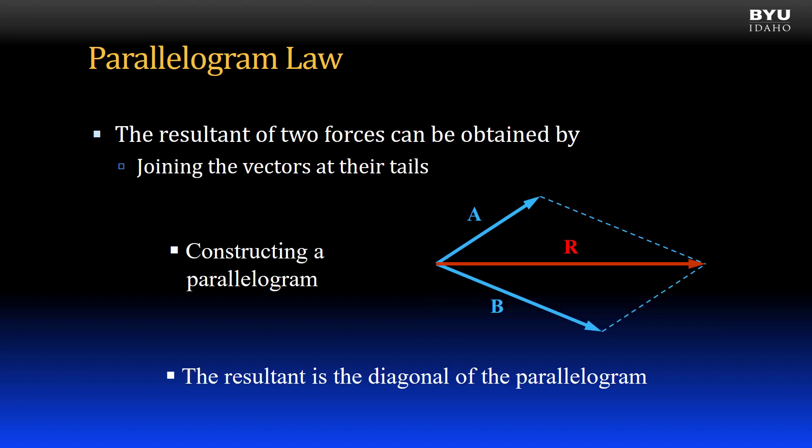The resultant vector is the diagonal of the parallelogram from the coincident tails of the original two vectors to the opposite corner.